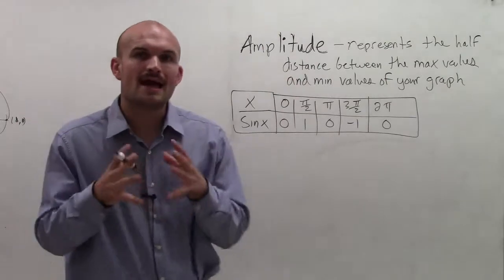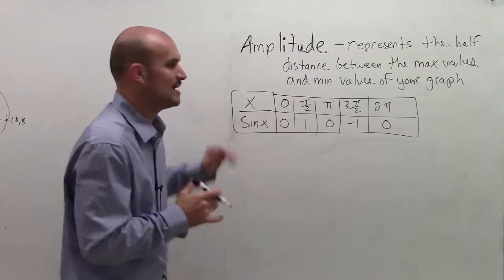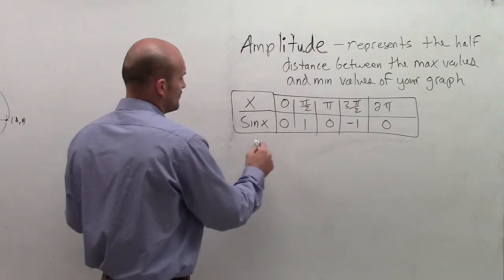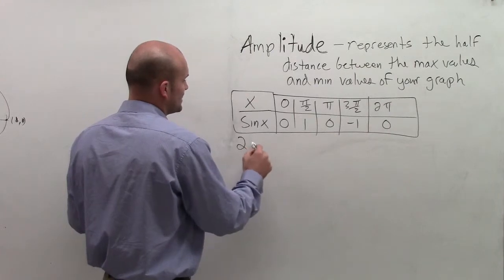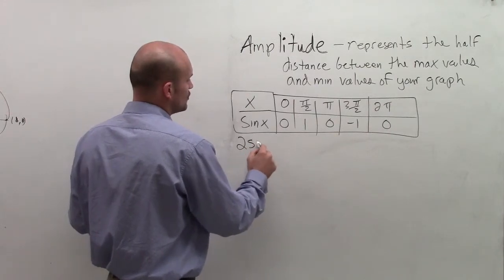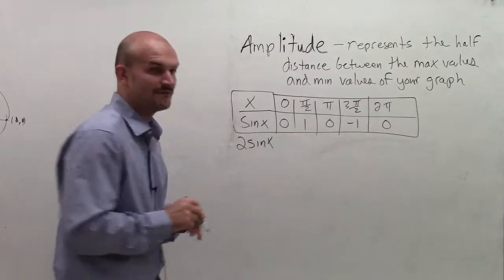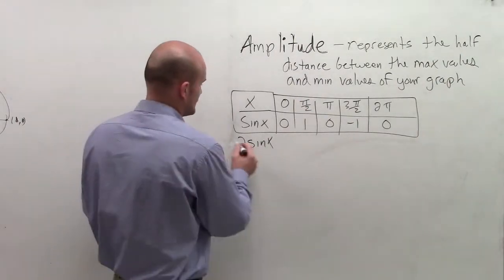Now, let's take a look at what would happen if I multiplied this by a factor. Rather than doing an x-y table, what if I did 2 times sine of x was my function. What would that change with my points?